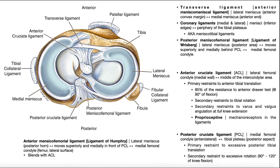The PCL connects part of the tibia to part of the femur. When we look at the origin and insertion of the PCL, it's more helpful to consider the proximal attachment up by the femur as the origin, and then it runs inferiorly to insert on the distal attachment, which is the tibia. The PCL's origin is going to be the medial femoral condyle — more specifically, the anterolateral surface of the medial femoral condyle.